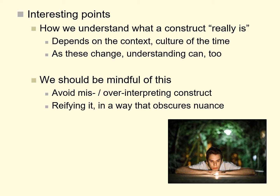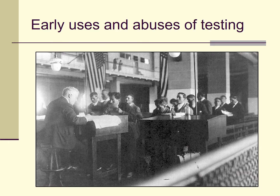In the next section, I'll discuss early uses and misuses of intelligence testing. We can see how the construct of intelligence came to mean something different from what Binet and Simon originally intended, and in that change there was some wrong done and some prejudices reinforced. We need to be aware of that historically and think critically about it in modern times as well. Here we can see testing being done around the turn of the 20th century at Ellis Island for immigrants coming into the United States.